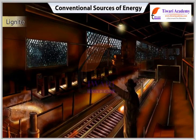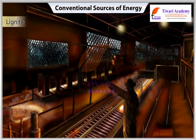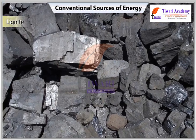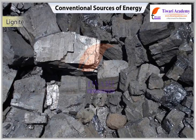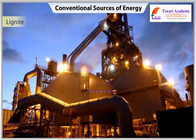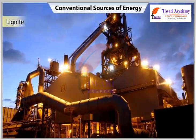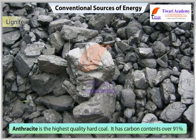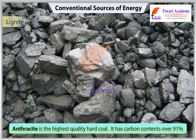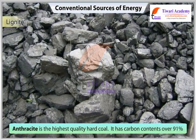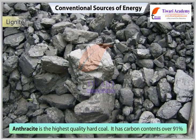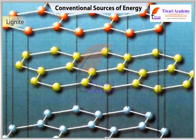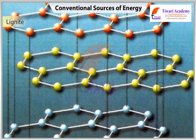Metallurgical coal is high-grade bituminous coal which has special value for smelting iron in blast furnaces. Anthracite is the highest quality hard coal; it has carbon contents over 91%. The structure of anthracite is almost similar to that of graphite.